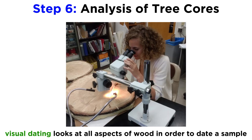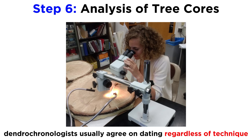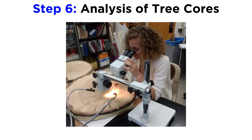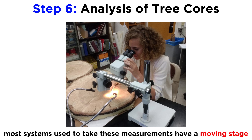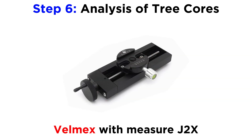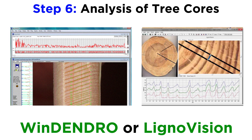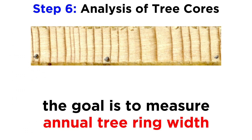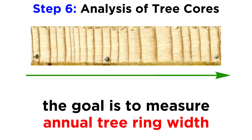Visual dating allows the dendrochronologist to use all aspects of the wood — such as color, late wood thickness, and marker rings — to determine the dating of a wood sample. Evidence shows that the same dating can be agreed upon by multiple trained dendrochronologists using their own approaches. There are many systems used to measure tree rings accurately, most using a moving stage controlled by a lead screw or optical linear encoder while the researcher views the core through a microscope — such as Velmex combined with Measure J2X to store data. Others use high-quality scans and digital markers like Windendro or LignoVision. The goal is to measure the width of each annual ring, measured perpendicular to its boundary.